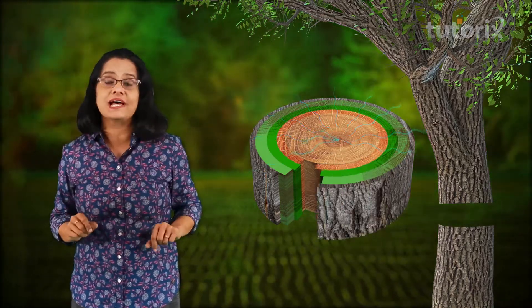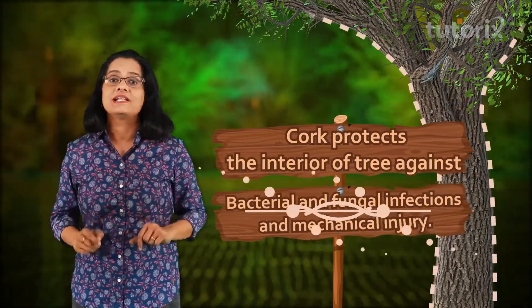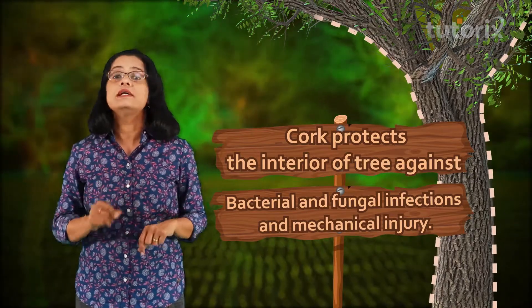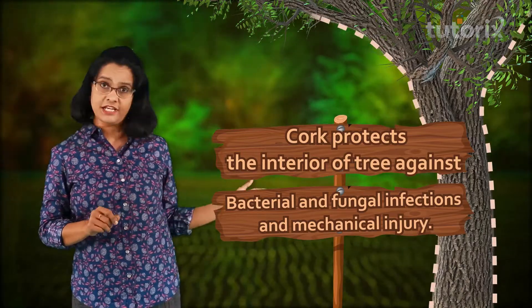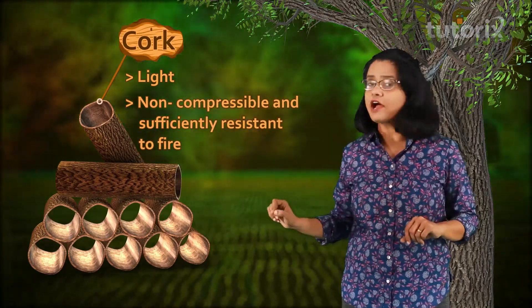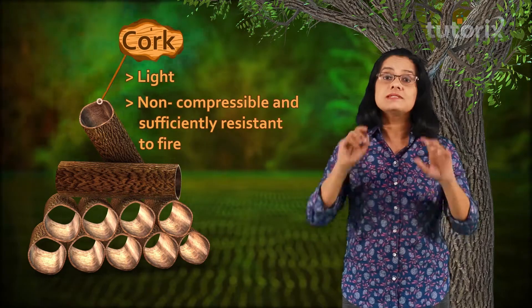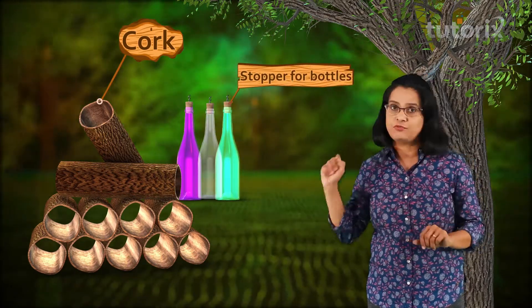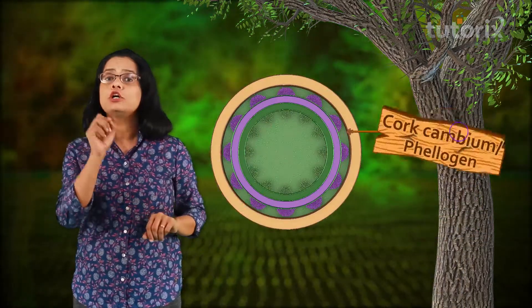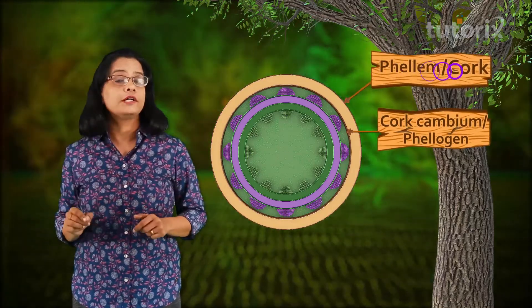Cork cells also prevent the interior of the tree from bacterial and fungal infection and mechanical injury. Cork is a light, non-compressible material that is sufficiently resistant to fire. Because of these properties, it is used commercially to make stoppers for bottles and as shock absorbers and insulators.